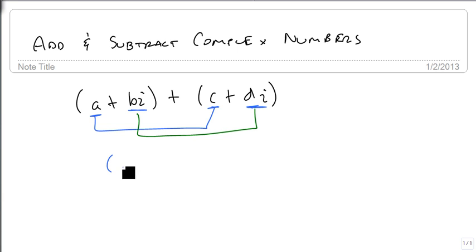And so our final result is a plus c plus b plus d, let's make that green so it stands out, b plus d i. But it's simply a matter of combining like terms. We just pretend that the i is like a variable.